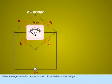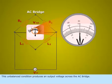These changes in inductances of the coils unbalance the bridge. This unbalanced condition produces an output voltage across the AC bridge.